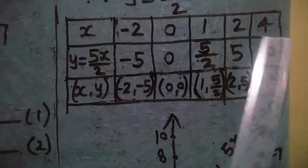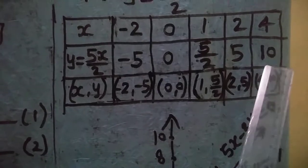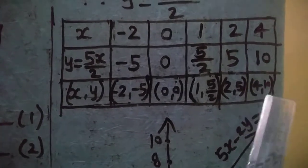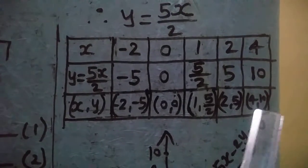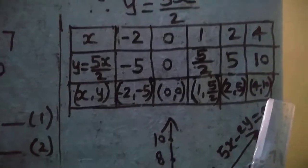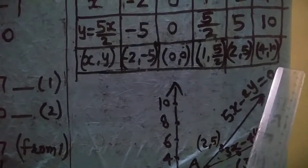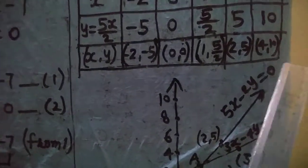When x = 4, we get y = 5×4 / 2 = 10. So the coordinates are (4, 10). These are the x-y coordinate values for the second equation.